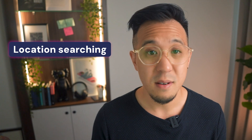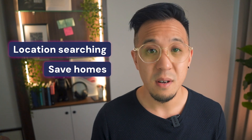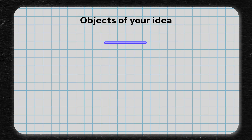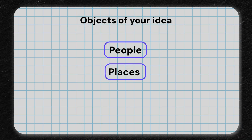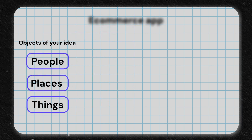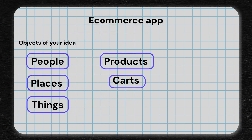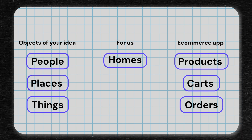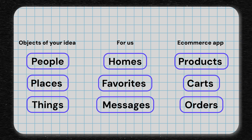Let's take a look at the mobile app example. A user is going to need to do certain things — for instance, search for homes by location, save homes, send messages to inquire about a home. One simple way to break down your idea is to think about the objects of the idea. These are often nouns: people, places and things. For an e-commerce app: products, carts, orders. For us, it's homes, favourites, messages.